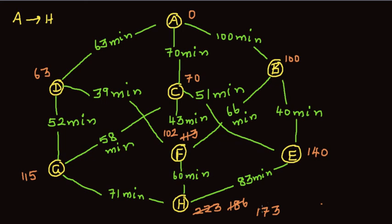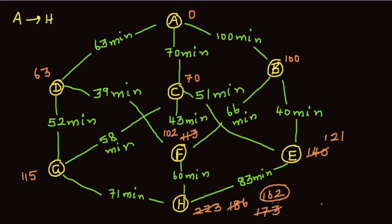And 102 plus 60 is 162 — that is even better! Is there any other way to better this? To reach H you can go from G, E, or F. Going the other way around: 70 plus 58 is not better. Trying 70 plus 51 gives 121, and 121 plus 83 is obviously going to be greater than 162. So the shortest time we can find is 162 minutes.